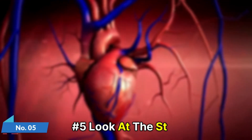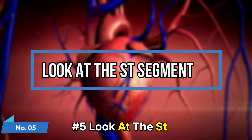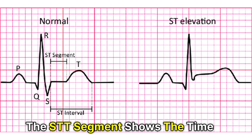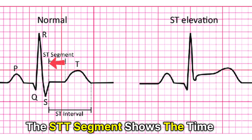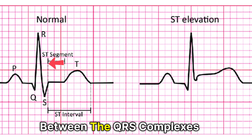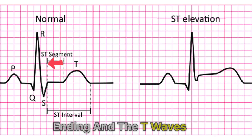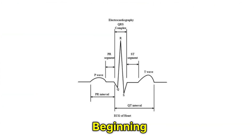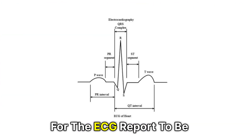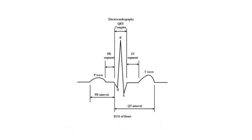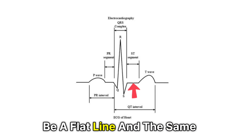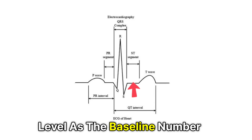Number 5: Look at the ST segment. The ST segment shows the time between the QRS complex's ending and the T wave's beginning. For the ECG report to be normal, the ST segment should be a flat line and the same level as the baseline.